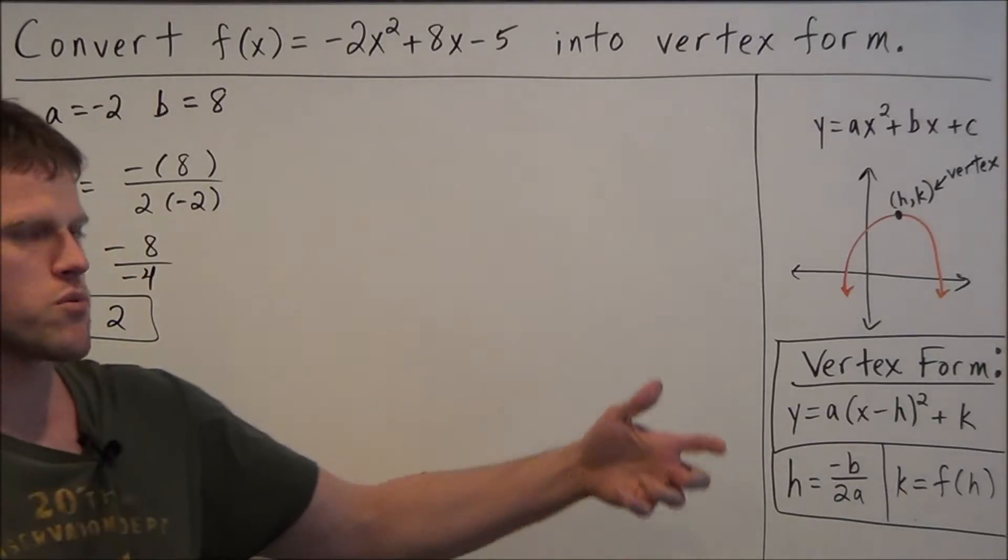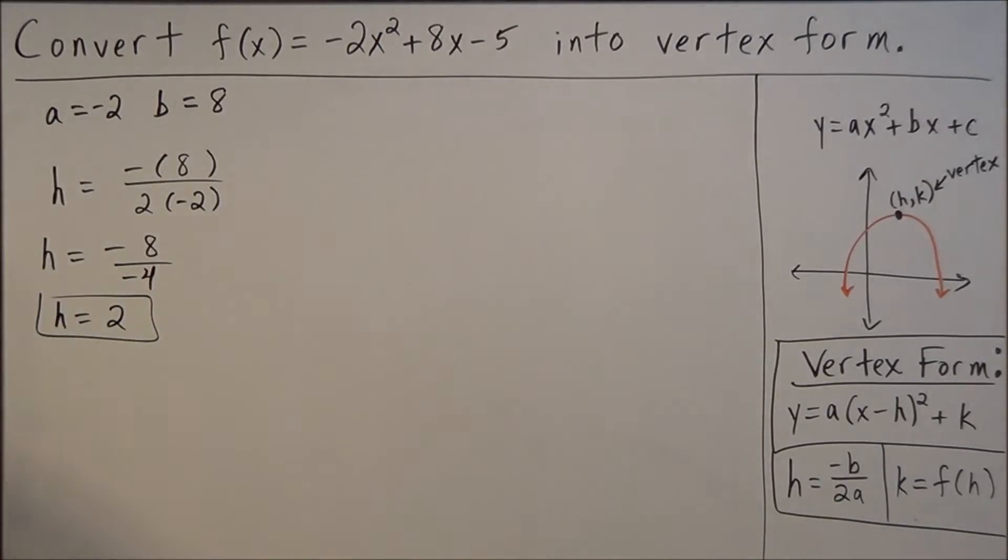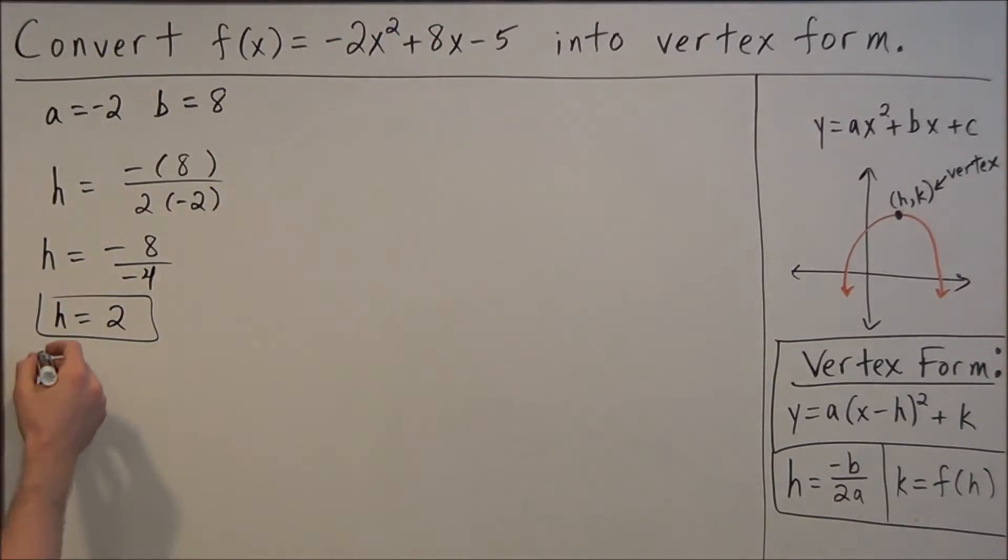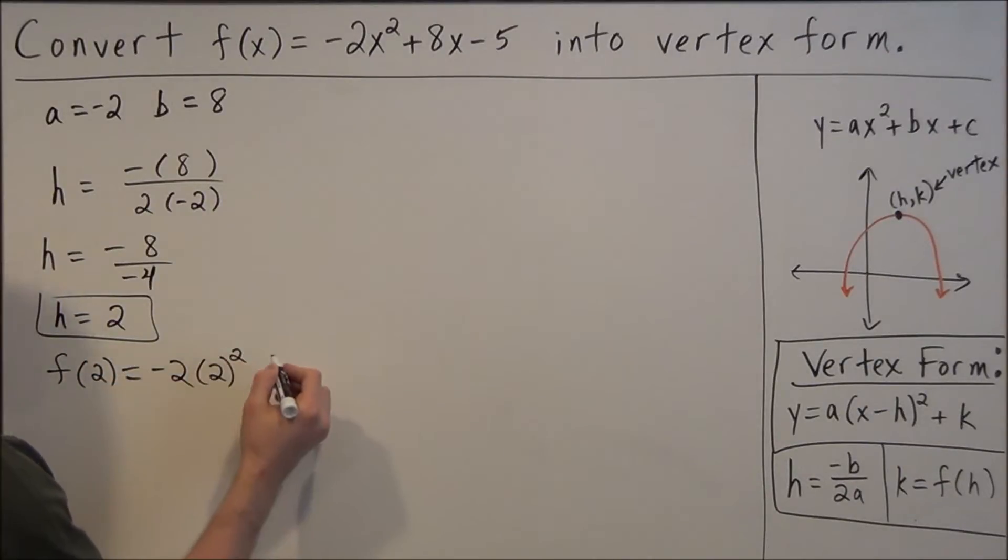So to find out k which will tell us the coordinate of our vertex, we're going to plug in 2 into the original function f(x). So we're going to have f(2) equals negative 2 times 2 to the second power plus 8 times 2 minus 5.